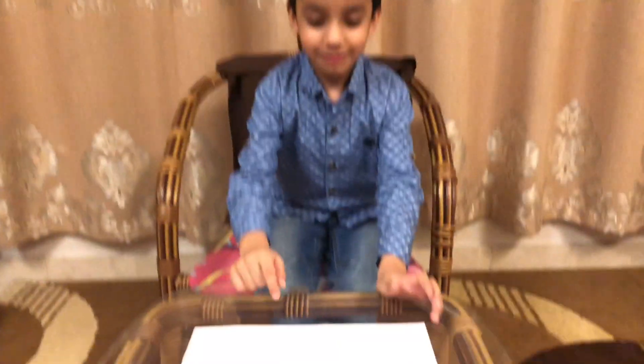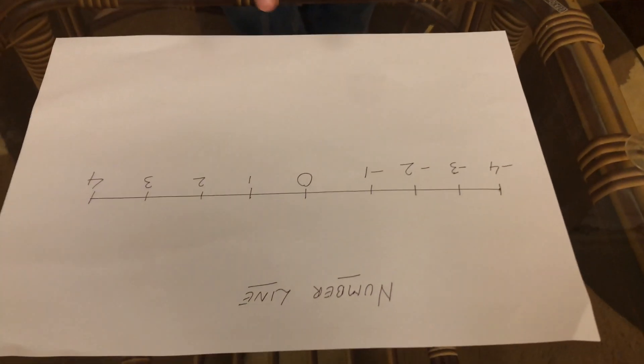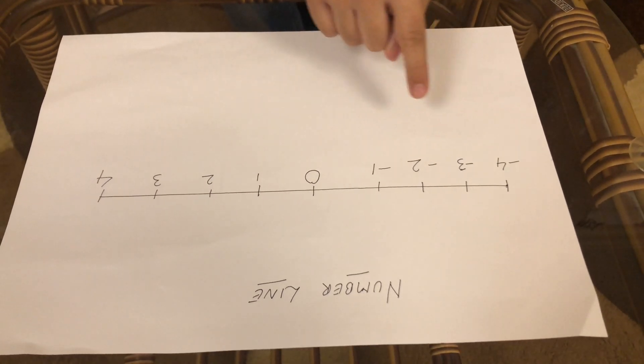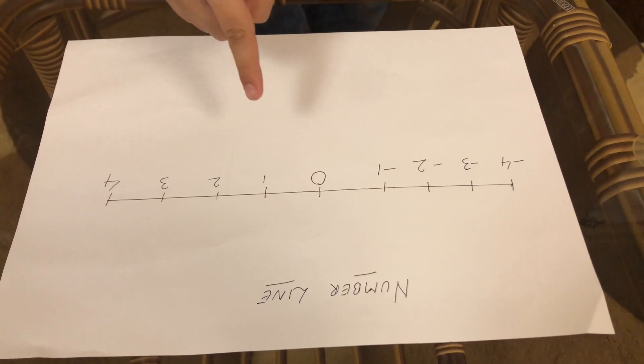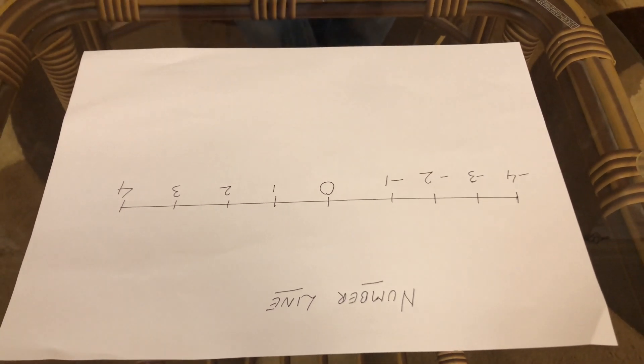0 doesn't have any value but it's a superhero! Can I tell you how? Look here at this number line. See, these are negative numbers and 0 is separating them from the positive numbers.